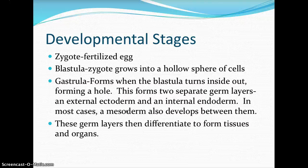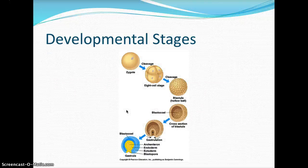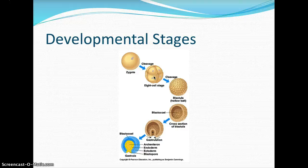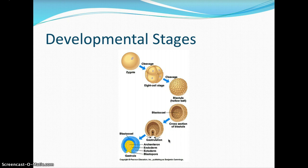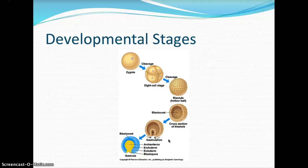When the mesoderm forms, you are at the gastrula stage, which is key in development because these germ layers differentiate to form the body tissues and organs. You can see the zygote, then the eight-cell stage. Upon fertilization, meiosis forms the gametes — sperm and egg — but once fertilization occurs and you have the zygote, cell division from here on is mitosis. The zygote divides into the blastula, a hollow ball of cells with a blastocoel, and then into the gastrula with endoderm, ectoderm, mesoderm, and blastopore.